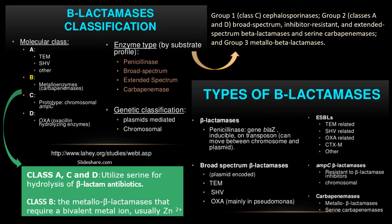From these four molecular classes, A, C, and D utilize serine for hydrolysis of beta-lactams — serine is the amino acid that is highly active in the reaction. Class B requires bivalent metal ions, usually Zn2+.